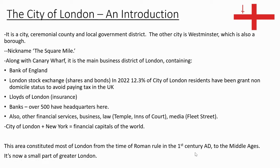The City of London is a city, ceremonial county, and local government district. The other city within a city in London is Westminster, which is also a borough. The nickname of the city is Square Mile, because that's about how big it is. Along with Canary Wharf, it's the main business district of London, containing the Bank of England and the London Stock Exchange. Interestingly, in 2022, 12.3% of City of London residents have been granted non-domicile status to avoid paying tax in the UK.